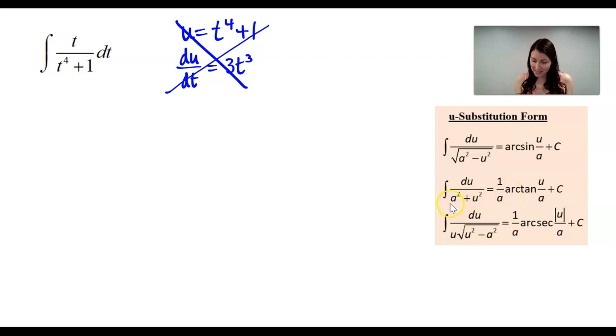So first we see that we have an a squared and then a u squared. Well, a is actually the constant. So a squared is going to be equal to 1 and therefore a is equal to 1. Then u squared is going to be t to the fourth. So u squared is going to be t to the fourth, which means the u value is going to be t squared.